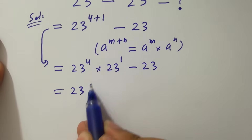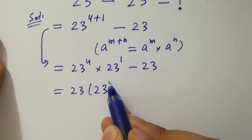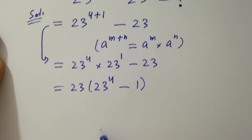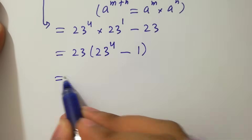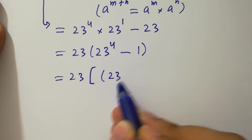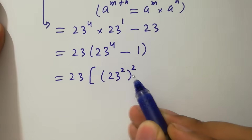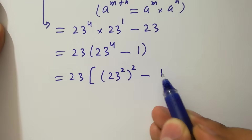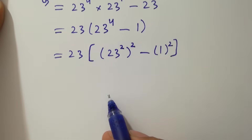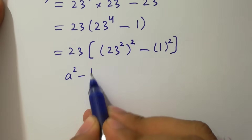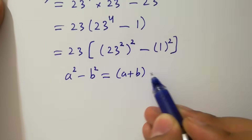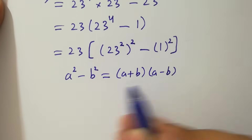23 can be factored out as common, giving 23 times (23 to the power 4 minus 1), which is the same as 23 times (23 squared) to the whole power squared minus 1 squared. By the formula a squared minus b squared equals (a plus b)(a minus b),